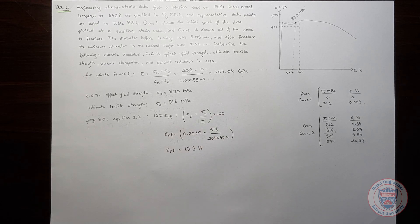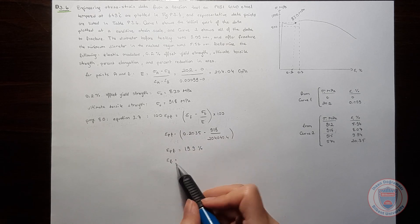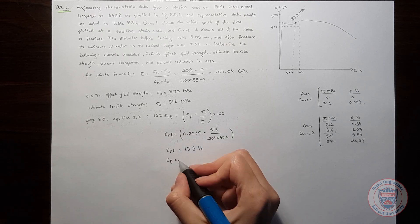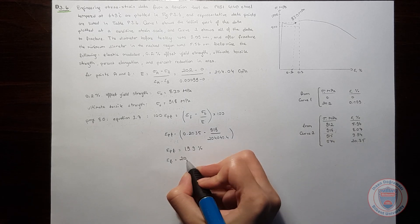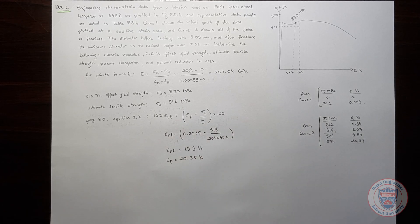And we also know that the percent elongation at fracture is 20.35 percent. So we are done with these parts. Let's find the percent reduction in area.